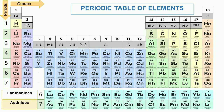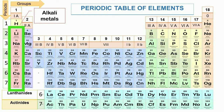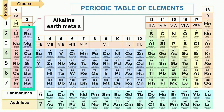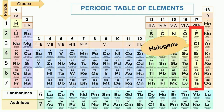As group 1 elements form strong alkalis, they are called alkali metals. As group 2 elements form bases and are present in the earth's crust, they are called alkaline earth metals. Group 17 elements are called halogens. The term halogen means salt-producing, and group 17 elements form salts when they react with metals.